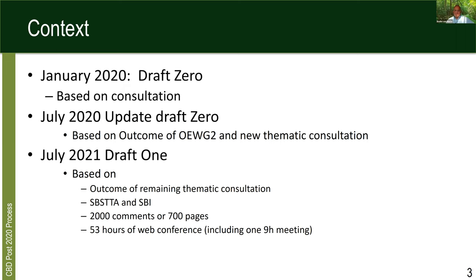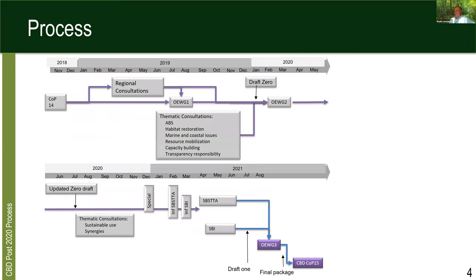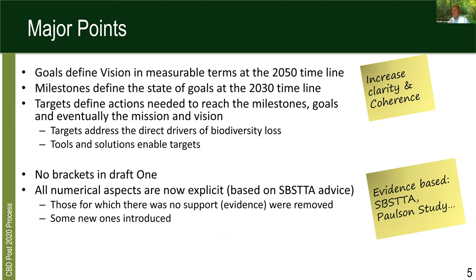On the process itself — I am an engineer by training so I like flow charts and boxes. We went through a fairly elaborate process of regional consultation, thematic consultation, and now we're in the tail end of the process with the open-ended working group, which is the key negotiating body that will start to meet online in August, continue to meet in person later, and then eventually go to the COP. In terms of major points, what we're trying to do is structure the document with goals that define our lofty vision in measurable terms, milestones that step down those goals to the 2030 time horizon, and targets that really focus on the action. Goals and milestones are about the status of things; targets are about action that makes change.